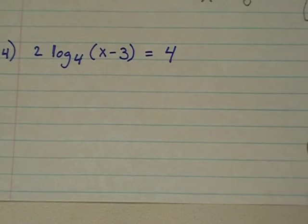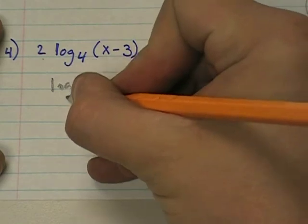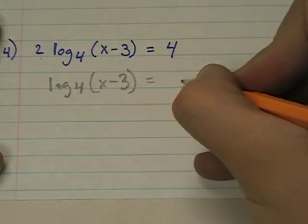Last question here, 2 log 4 x minus 3 equals 4. Very similar. The first thing we need to do is isolate the log. How do we do that? We divide by 2. So if I divide by 2, I end up with log 4 of x minus 3 equals 2.